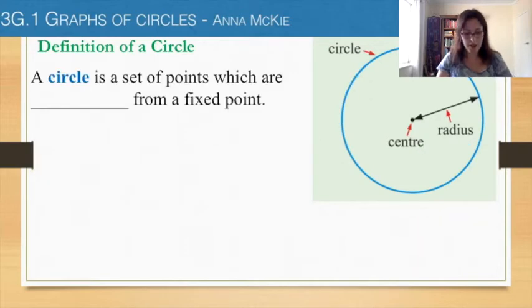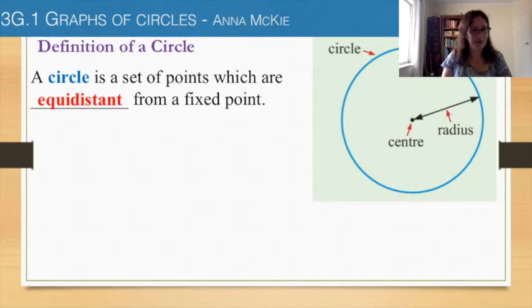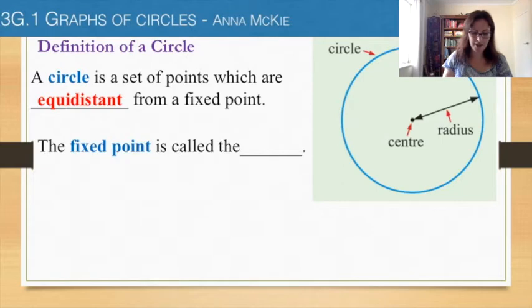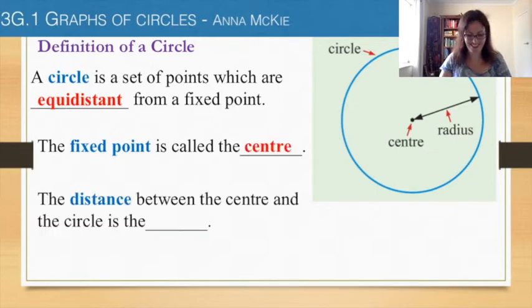So here, a circle is a set of points which are what from a fixed point? Thinking about all of those points, they are equidistant. The fixed point is called the center. And lastly, the distance between the center and the circle is the radius. So it's the distance that we're after. That's actually the part of the equation. It's the distance between the center and the radius all the way around.